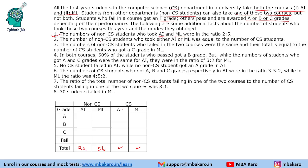The number of non-CS students who took AI or ML — that is 2A taking AI and 5A taking ML — totals 7A, and this is equal to the number of CS students. So there are 7A CS students. Since CS students take both courses, the total in the CS row is 7A for AI and 7A for ML. So the total number of non-CS students equals the total CS students in this case.